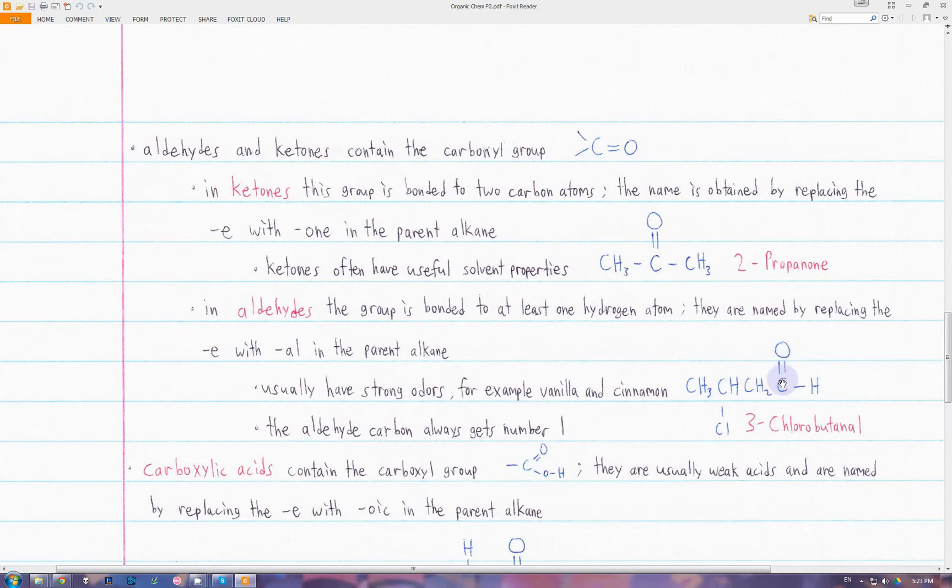Instead, we always give it the location number one. So we start here, the numbering, one, two, three, four. Then this chlorine substituent group is at position three, and this molecule is going to be 3-chlorobutanal. The special characteristic of aldehydes is their strong odors. For example, the molecules which are responsible for the smell of vanilla and cinnamon are aldehydes.